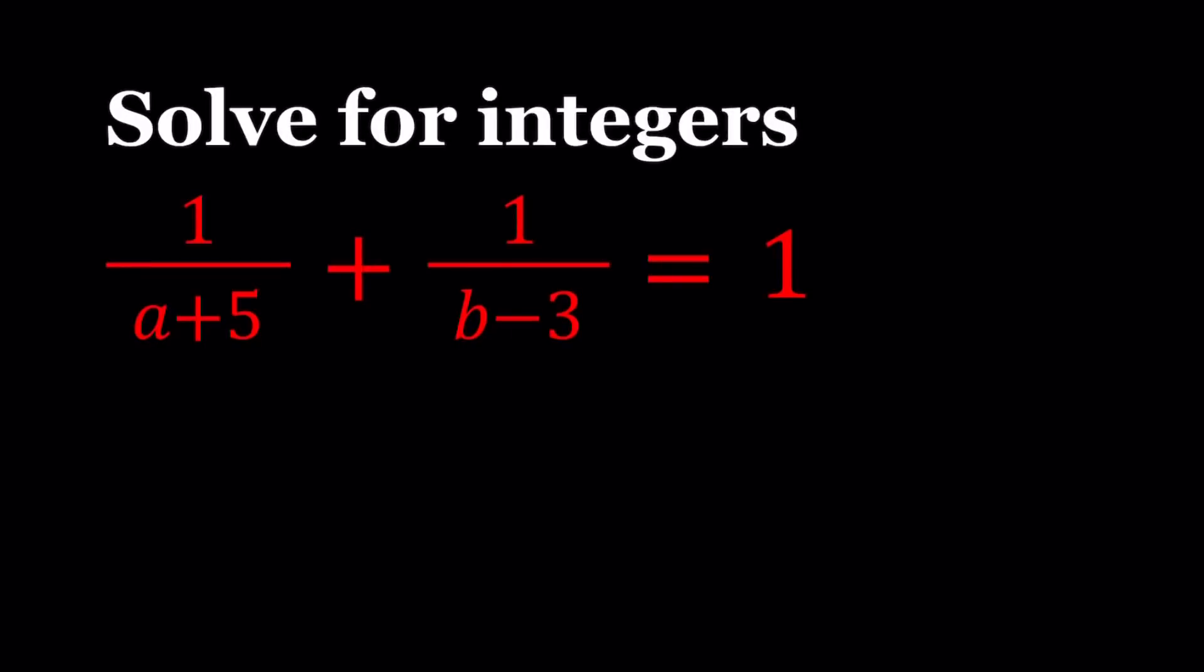Hello everyone. In this video, we're going to be solving a Diophantine equation. We're going to be solving for integers this equation: 1 over a plus 5 plus 1 over b minus 3 equals 1. So a and b are integers, and we're going to be finding all the solutions.